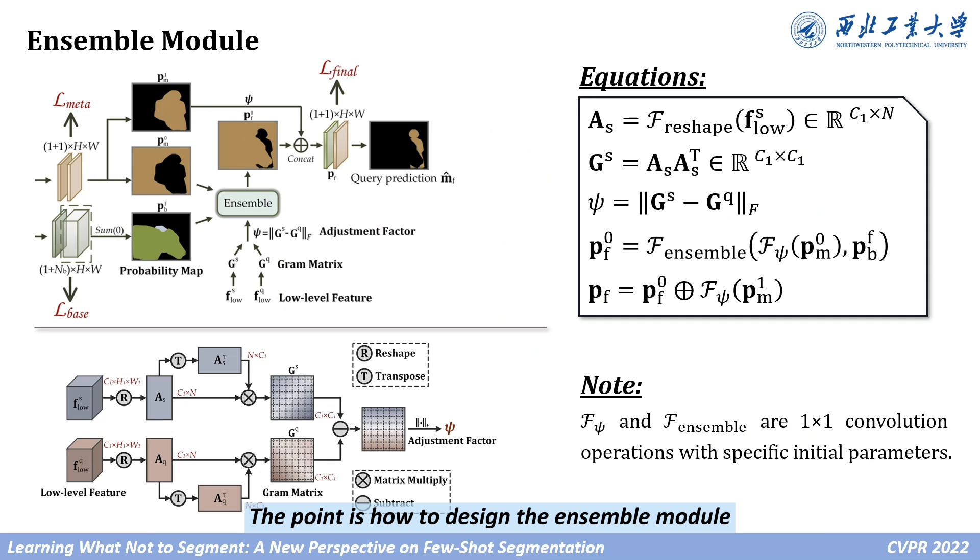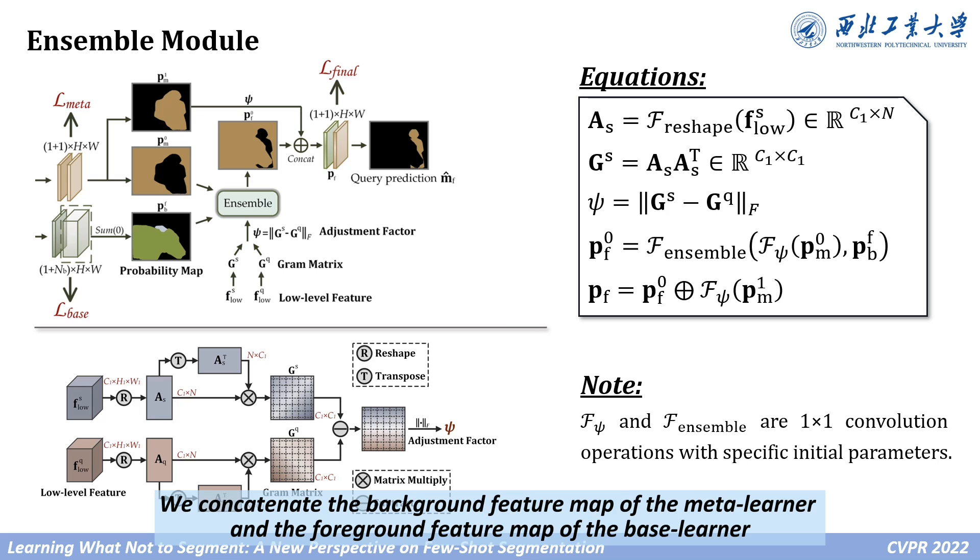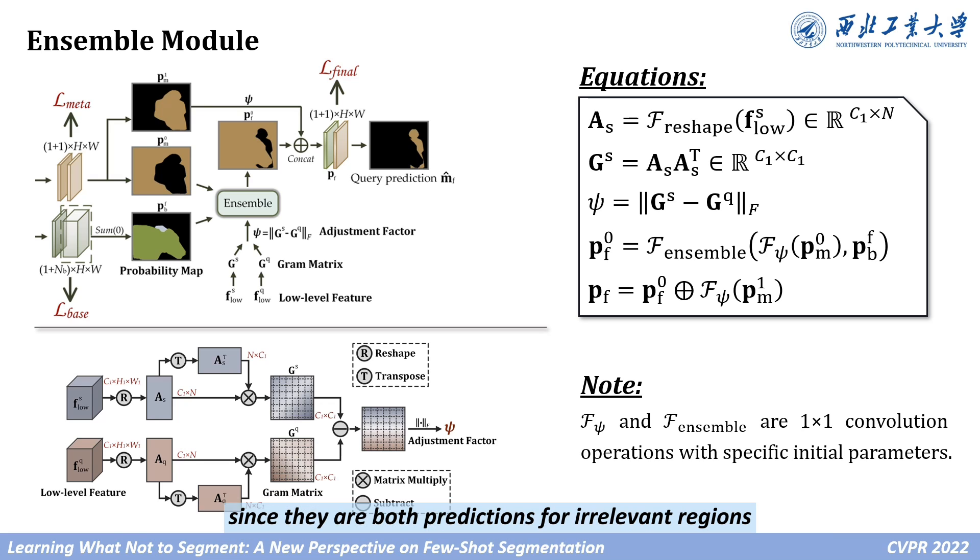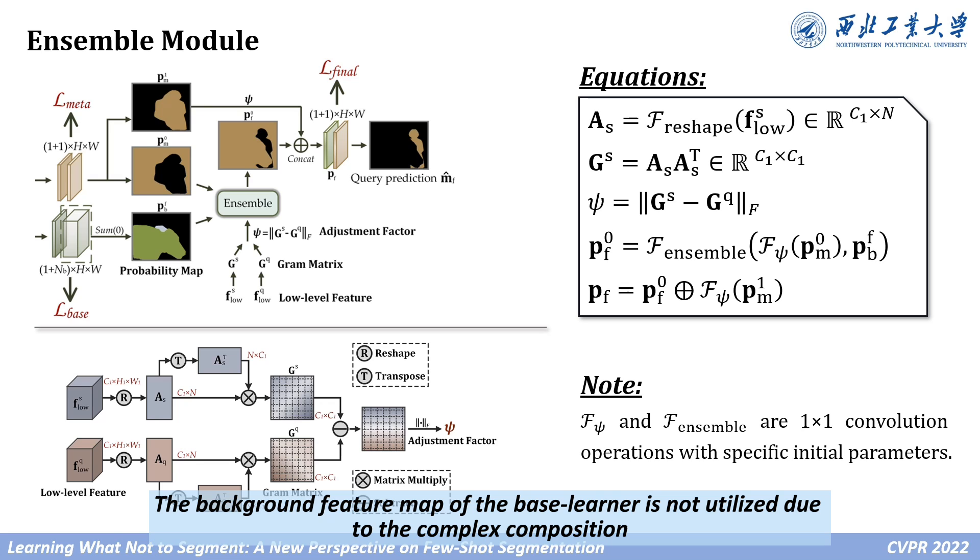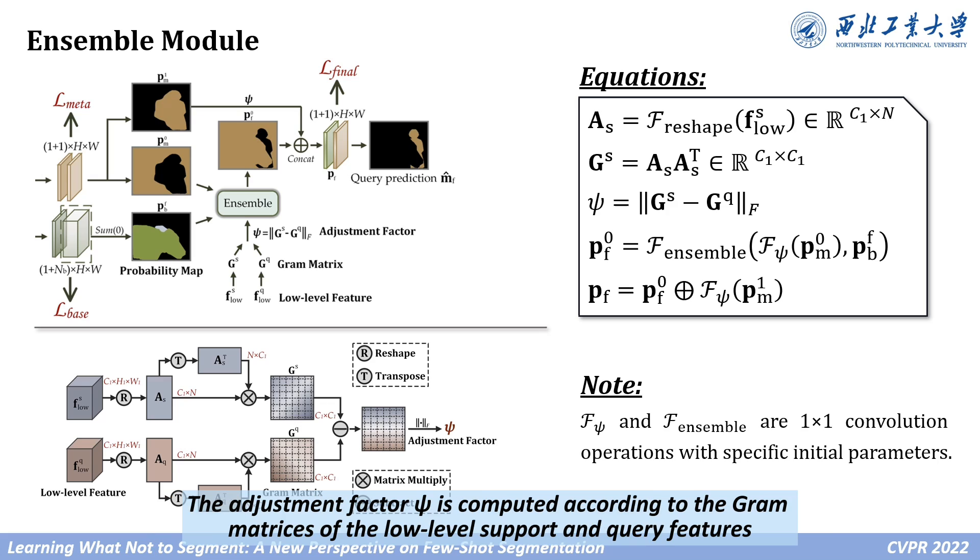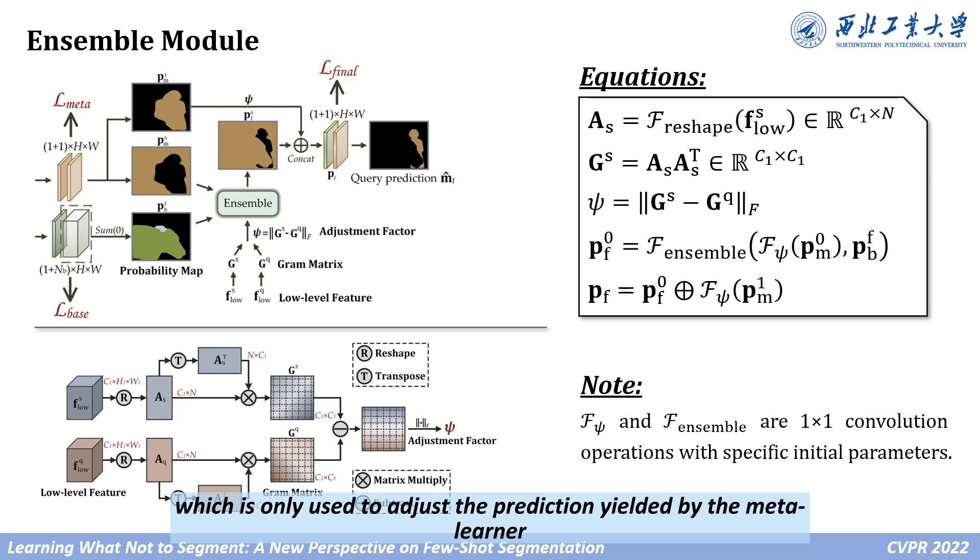The key is how to design the ensemble module. We concatenate the background feature map of the meta learner and the foreground feature map of the base learner since they are both predictions for irrelevant regions. The background feature map of the base learner is not utilized due to the complex composition. The adjustment factor, PSI, is computed according to the gram matrices of the low-level support and query features, which is only used to adjust the prediction made by the meta learner.